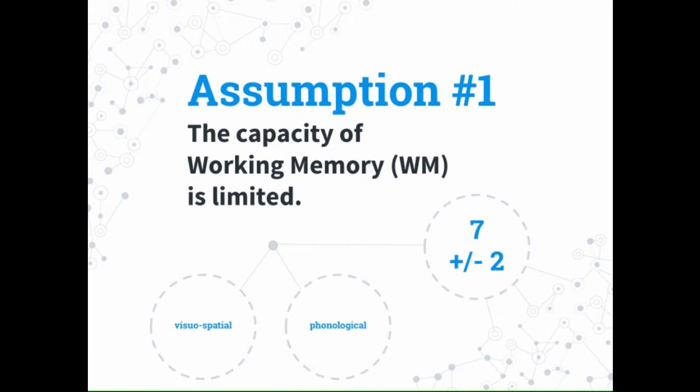When information is coming into our working memory, it comes in a couple of different ways — visuospatially and phonologically — and our brain processes those two things differently. If we use those channels effectively, we can help with the learning process. That ties together with another connection I'll explain in just a little bit.